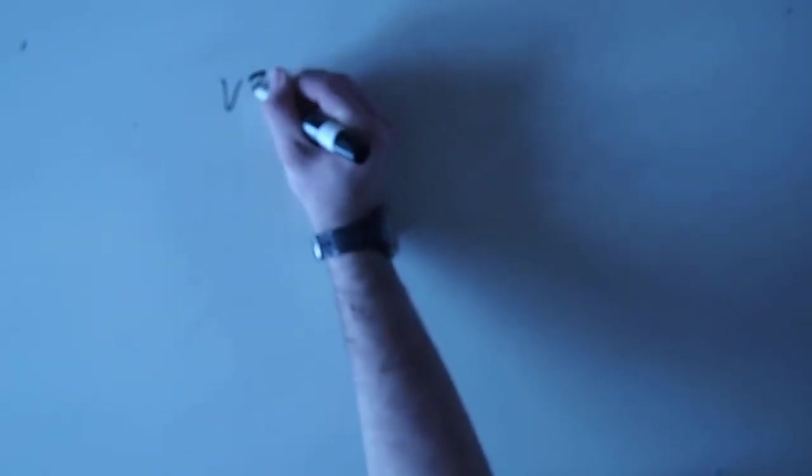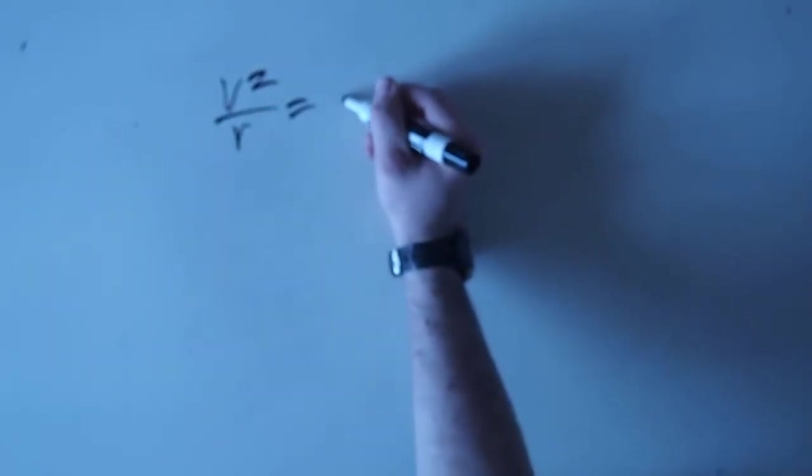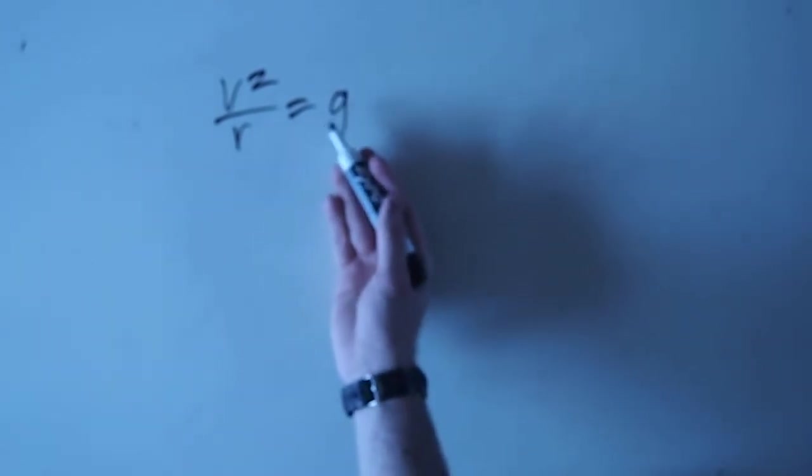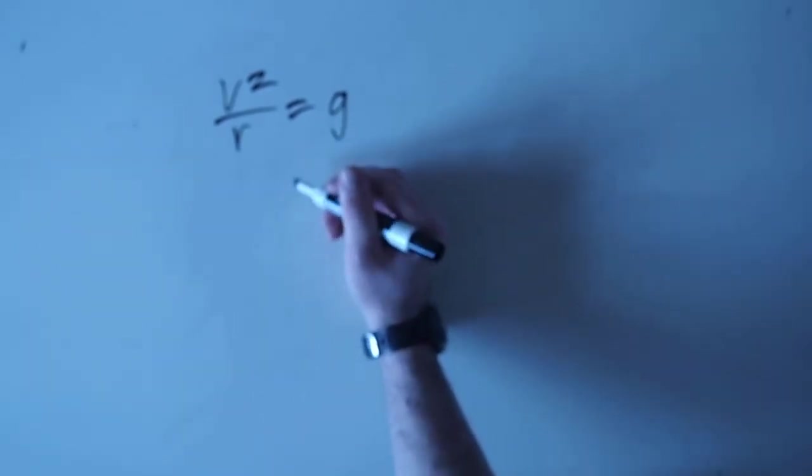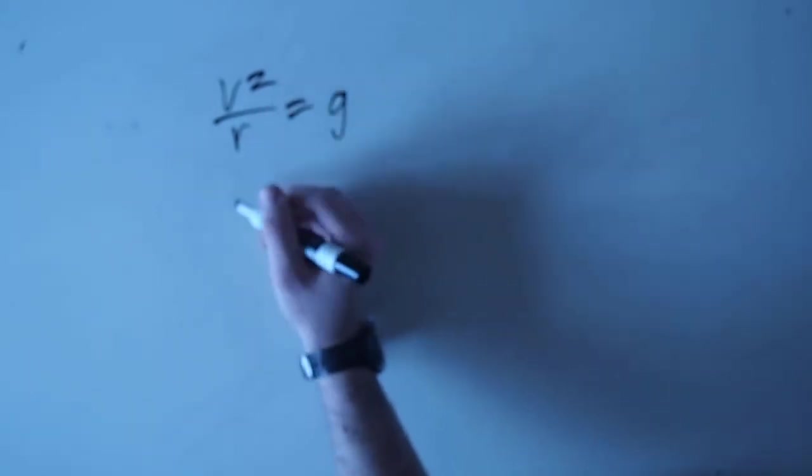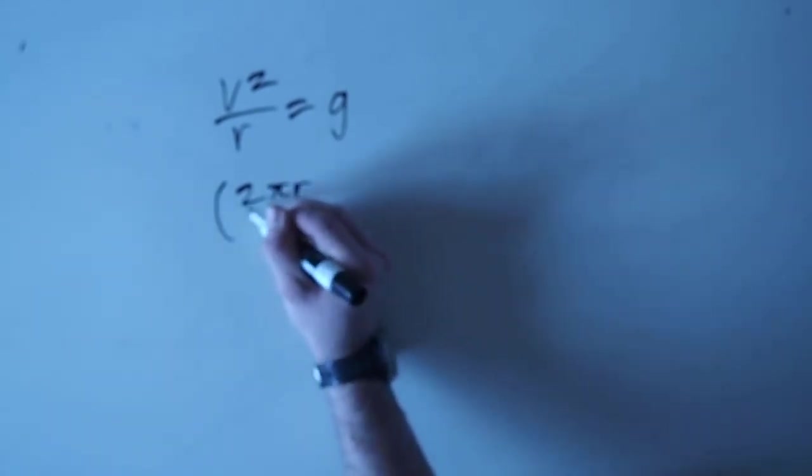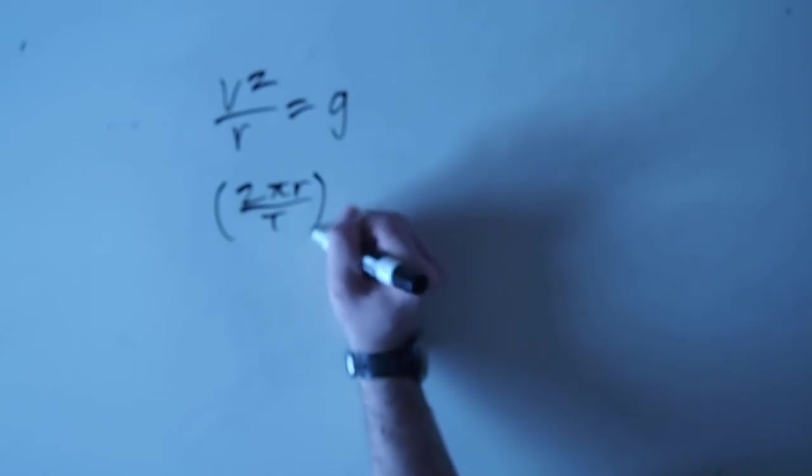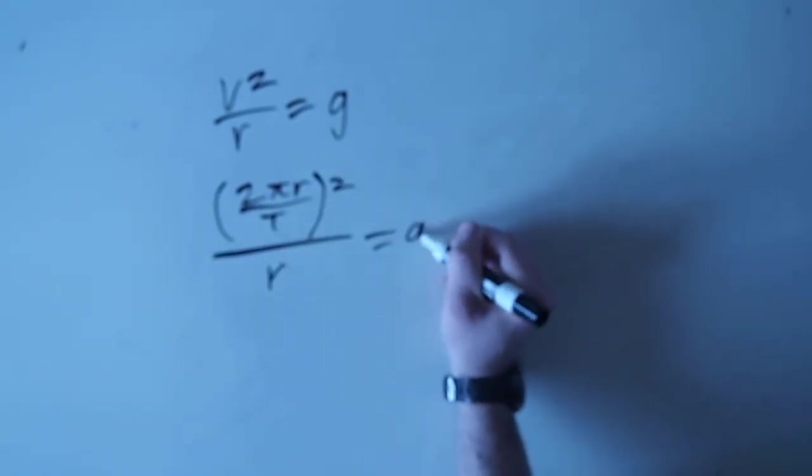Well, once again, we'll be using v squared over r. But this time, we'll set it equal to g. Because then we'll know anything greater than what we get will be enough for objects to fly off the equator. So, once again, we have 2 pi r over t squared r. This time, it's equal to g.